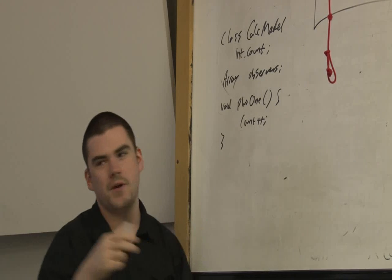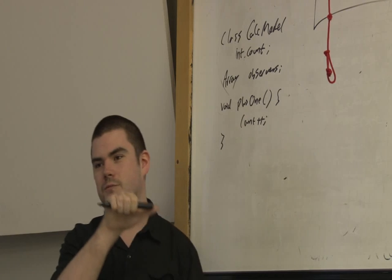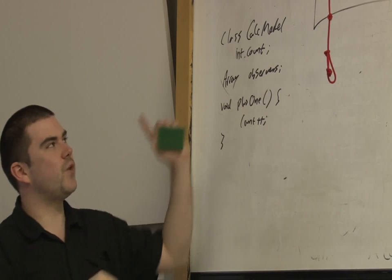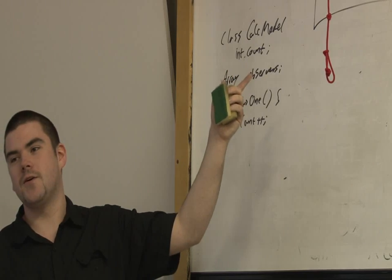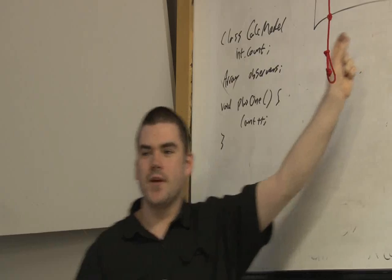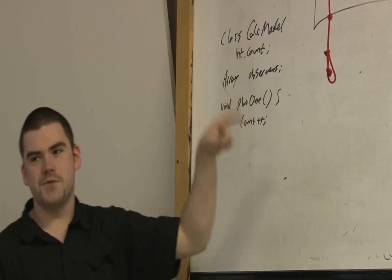For this whole observer thing to work, we need a way of registering an observer with this guy. So what we want to have is that if for some weird reason we wanted two windows, or maybe a window and a really small little window here that just displayed the count, we could have our array of observers.